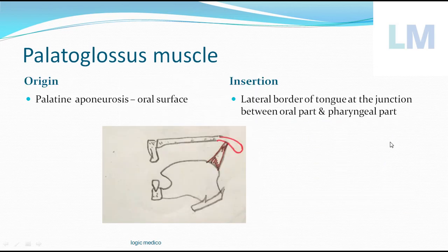Coming to the origin and insertion of palatoglossus: within the soft palate, there is a framework called the palatine aponeurosis. The muscle takes its origin from the oral surface of the palatine aponeurosis. It then descends downwards and outwards to get attached to the lateral border of the tongue at the junction between the anterior two-thirds (the oral part) and the posterior one-third (the pharyngeal part).